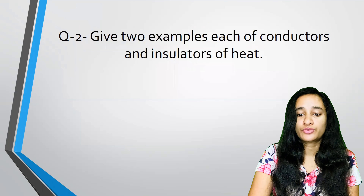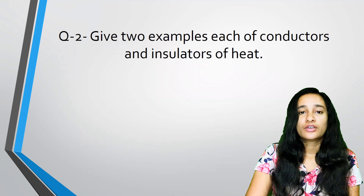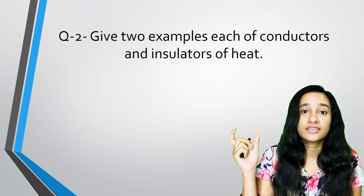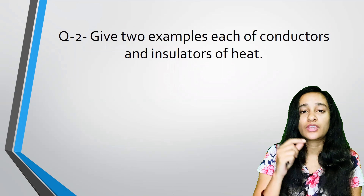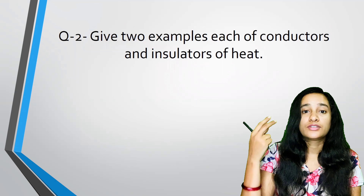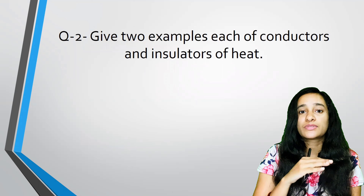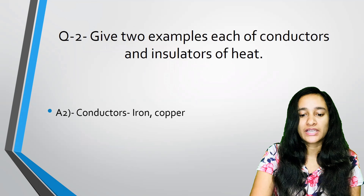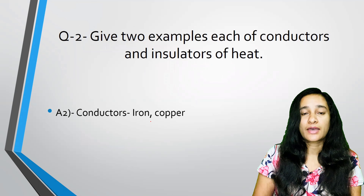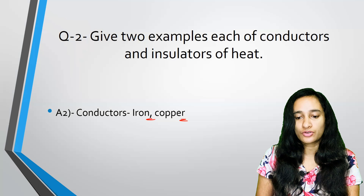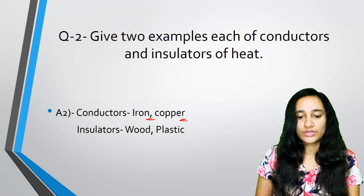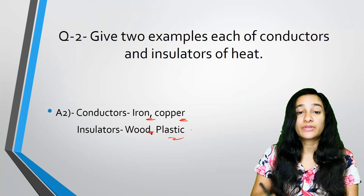Second, give two examples of each of conductors and insulators. What are conductors? Iron and copper. And what are insulators? Wood and plastic.